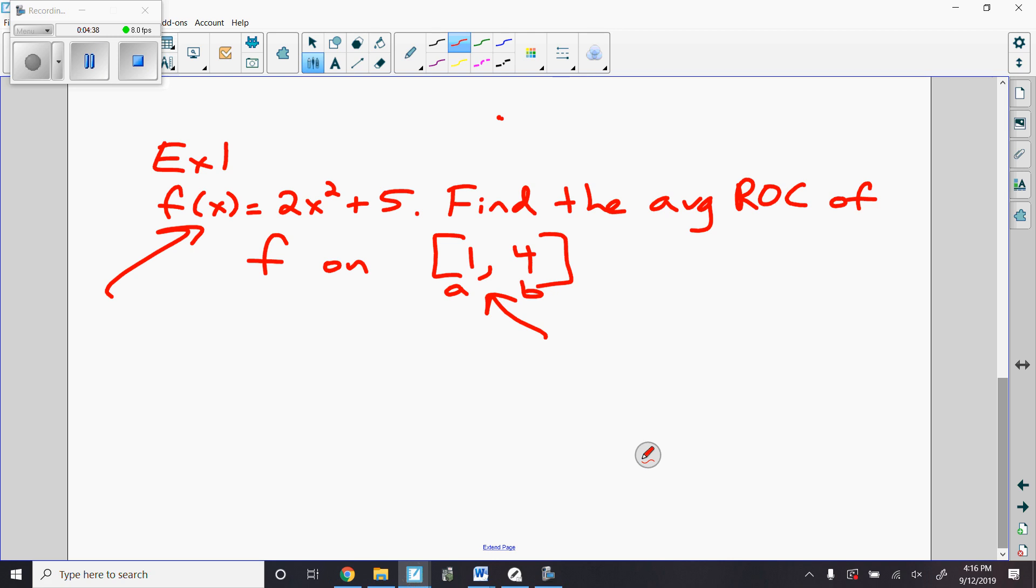So my average rate of change of f on the interval [1,4] has to equal f(4) minus f(1) over 4 minus 1. This is f(b) minus f(a) over b minus a. Well, f of 4, how do I calculate that? I just have to plug it into this formula right here. 4 squared is 16, 16 times 2 is 32, 32 plus 5 is 37.